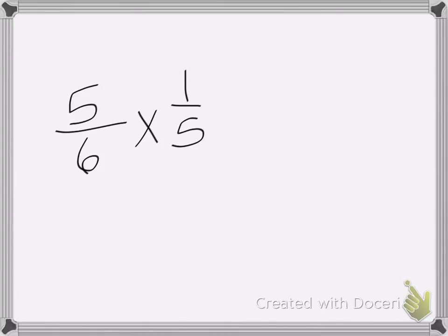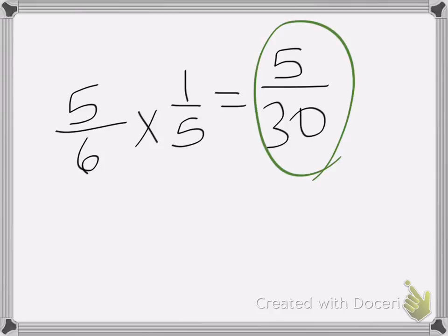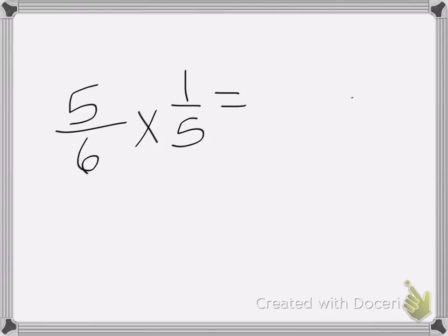Now I can just multiply that across if I want and end up with 5/30ths. Sometimes it's hard to reduce this number when we get to this point, so what I'd rather do is reduce first. Though if I did this, I would reduce it down to 1/6. This is especially helpful when we get to bigger numbers.